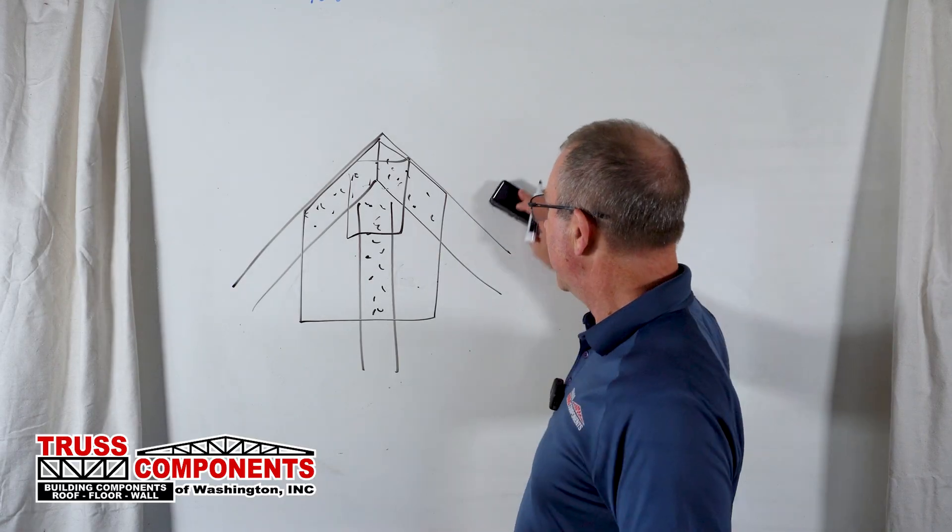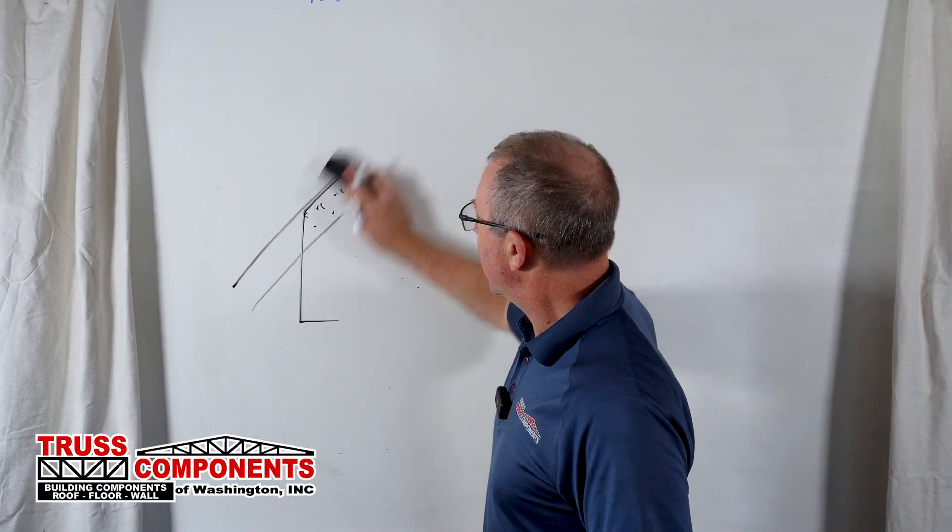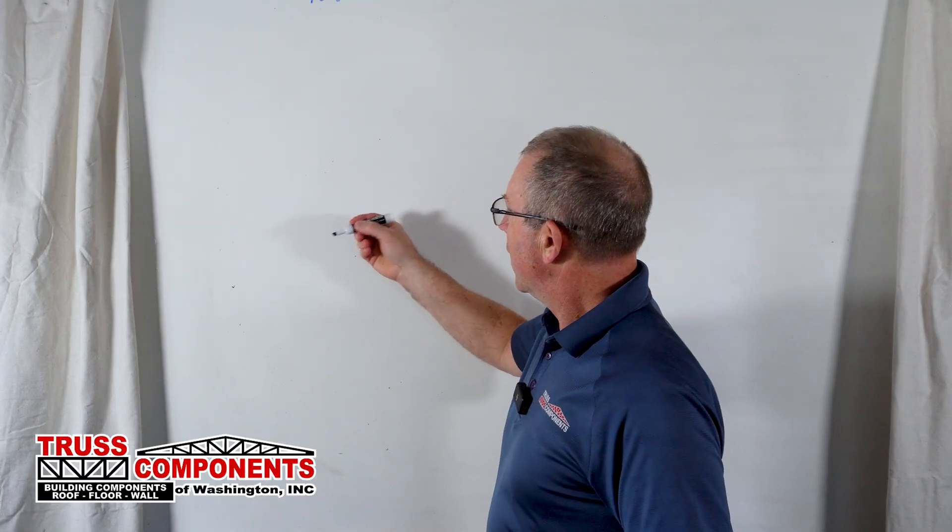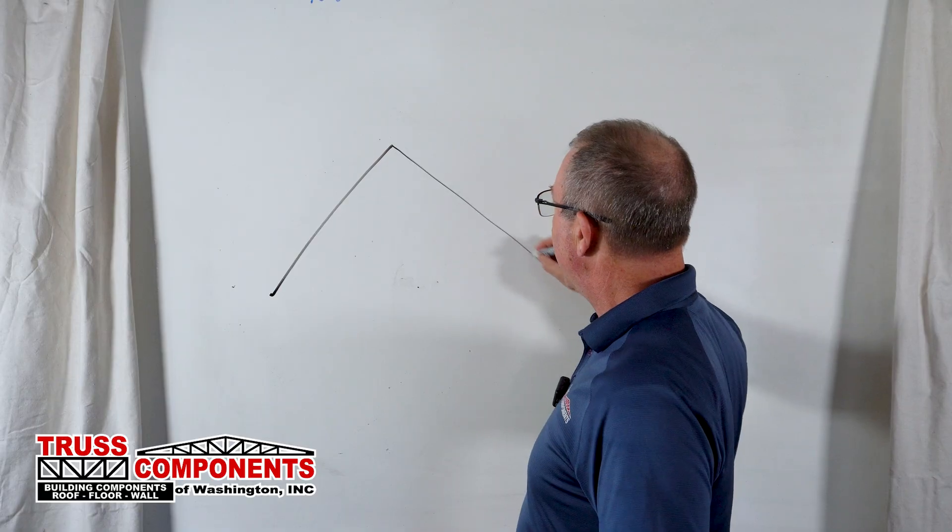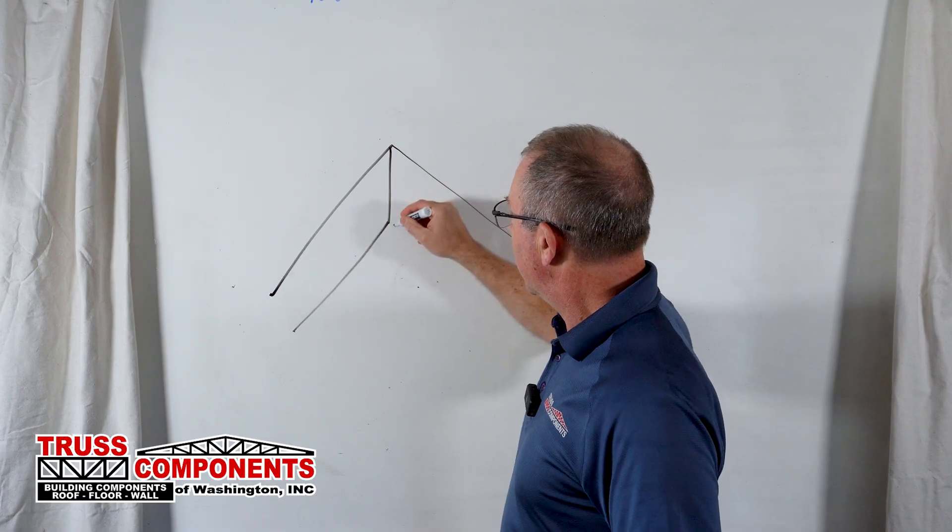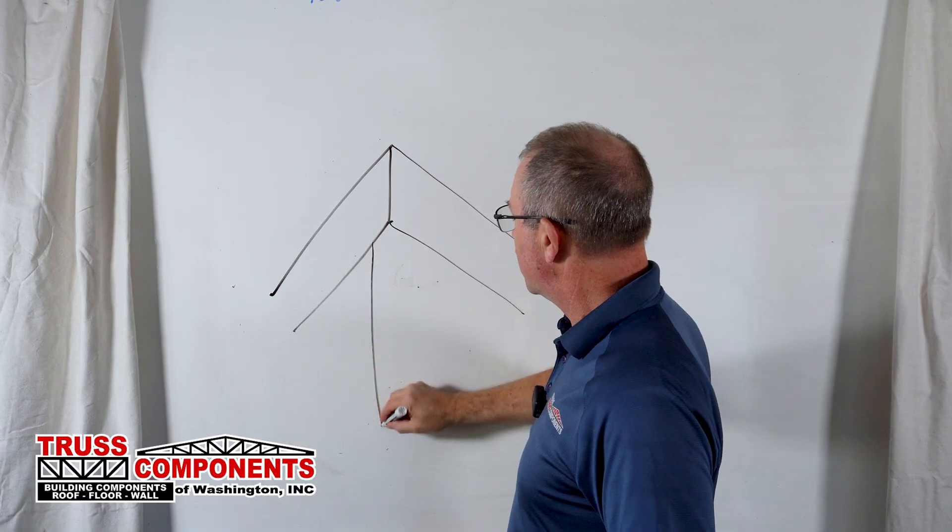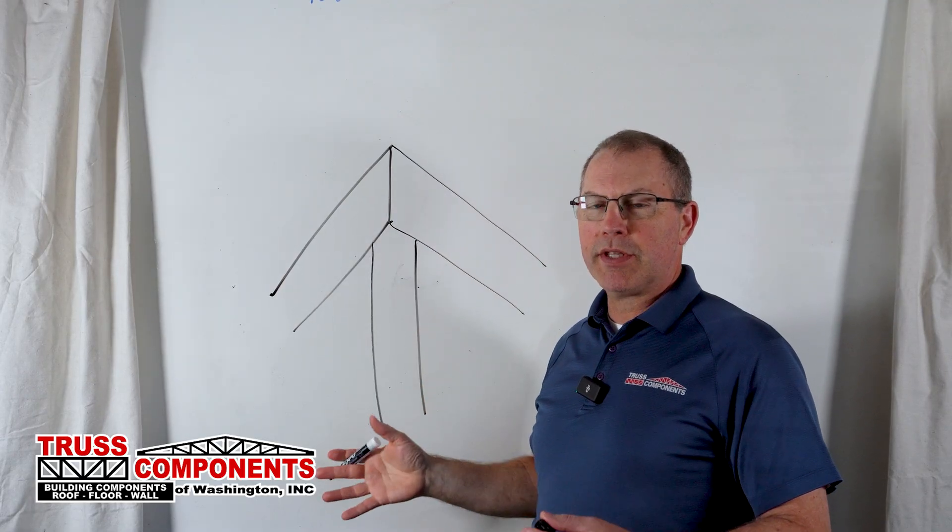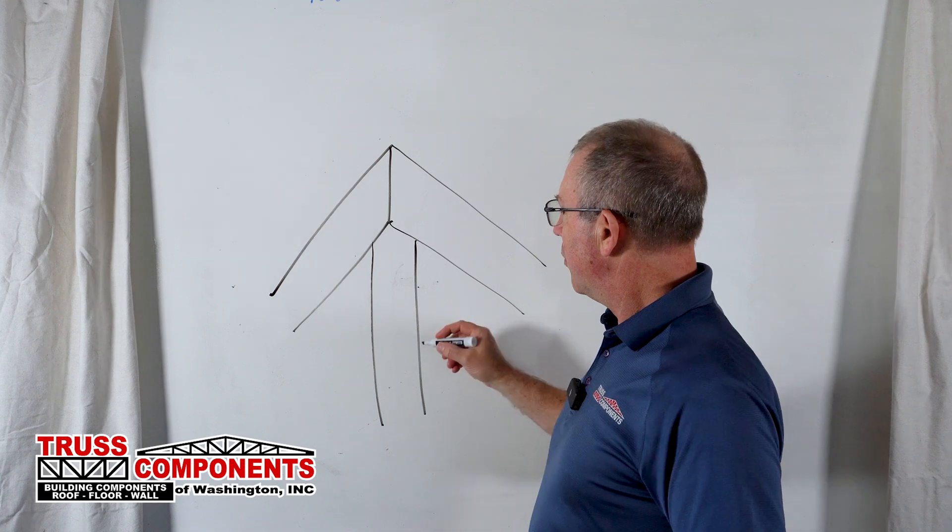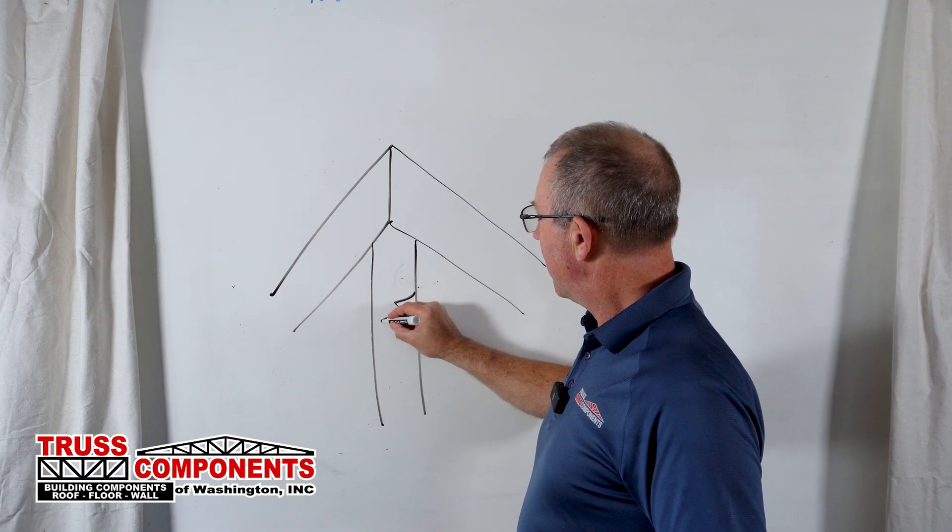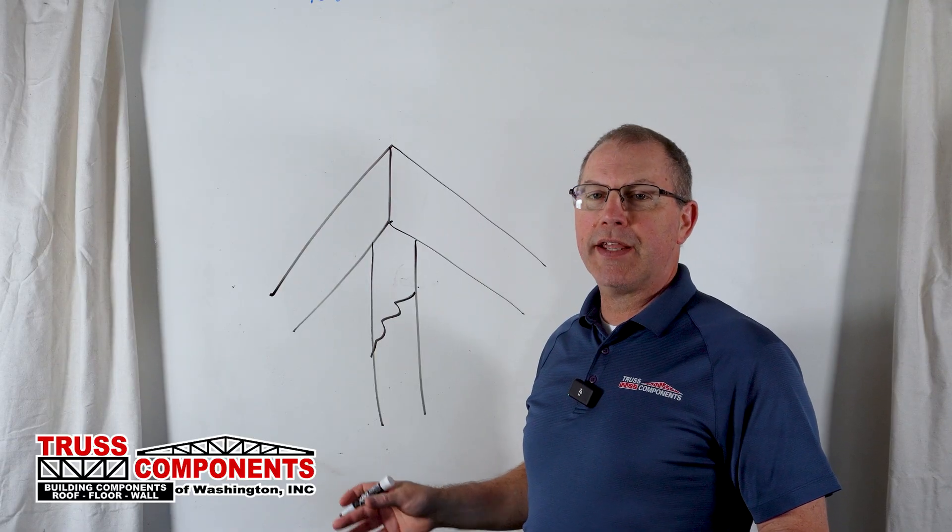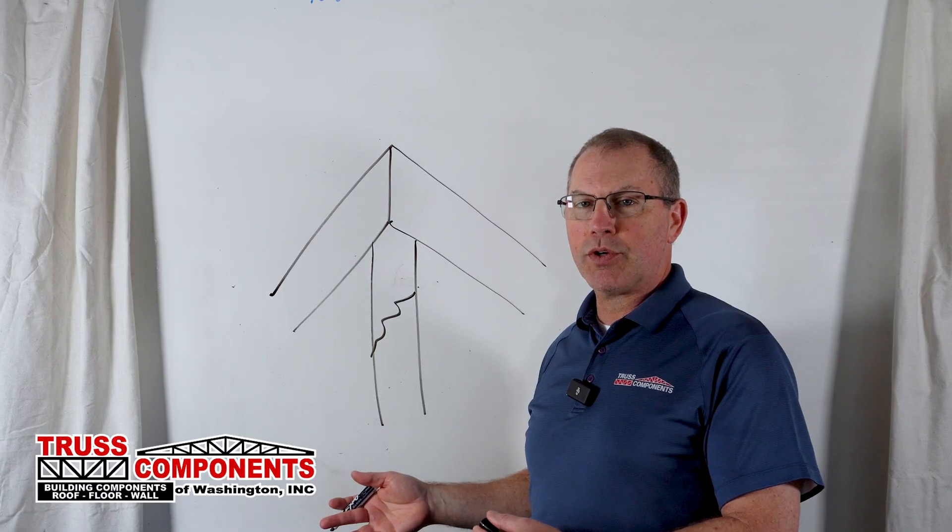The second thing that you might run into is a broken or missing member, and that can happen a few different ways. It might be a piece of wood that has a defect in it, like a knot. It could be that while the truss was being loaded, the forklift caught a piece of lumber or put too much pressure on it. But anyway, you might have a break in a member, and we need to reinforce that in order to bring it back to its original strength.